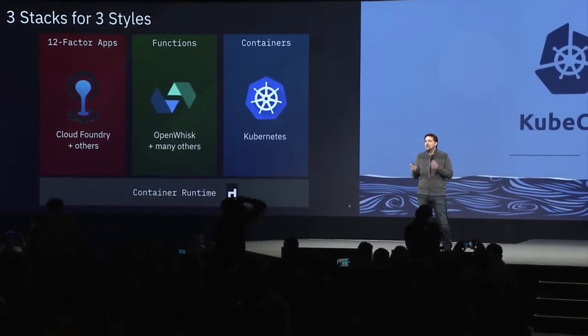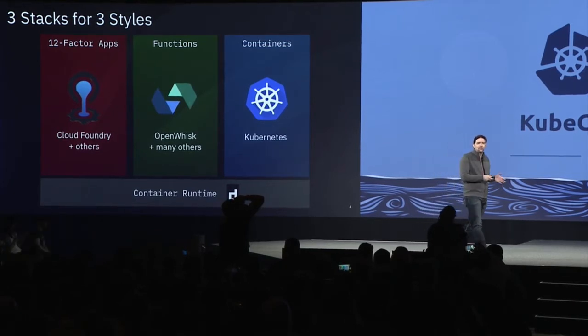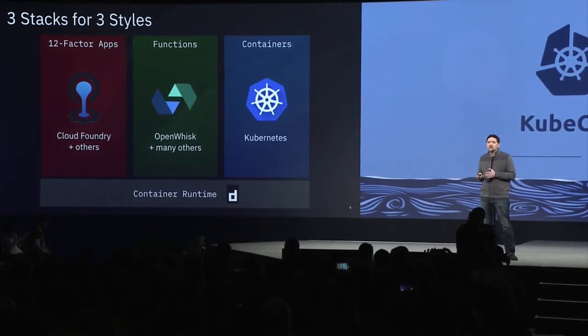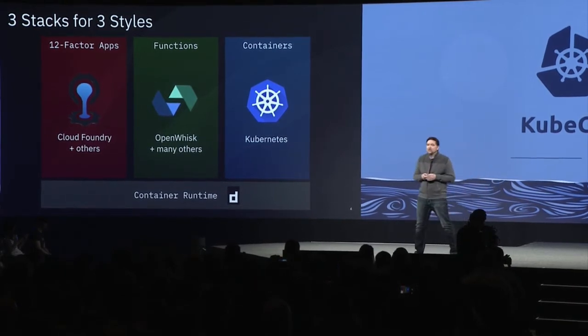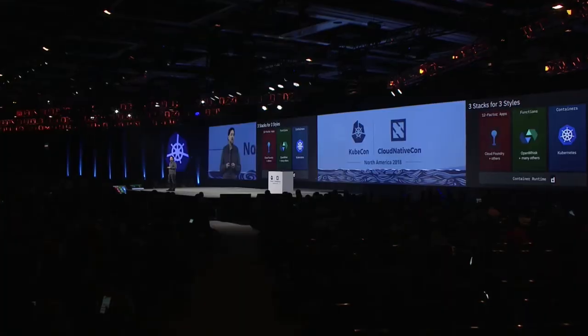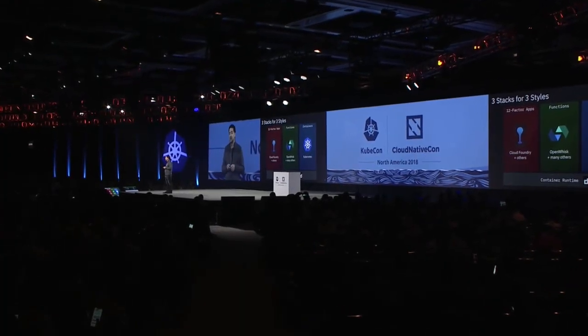We've been building three independent separate stacks to handle general purpose containers, to handle applications, and to handle functions. And by building them separately, we're forcing people to make choices. We're forcing developers to pick sides. We're making the environments more complex and creating friction as developers try to mix these dissimilar styles together.